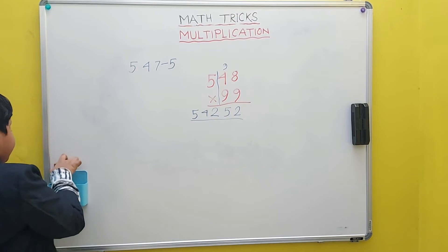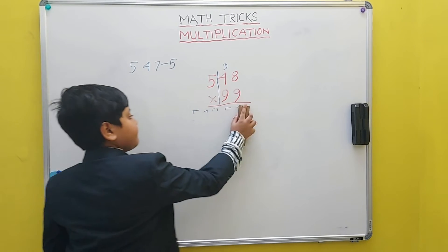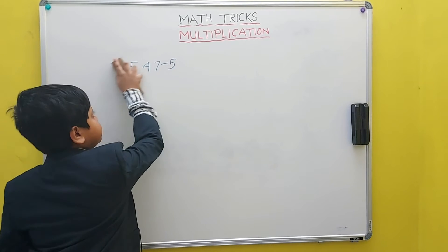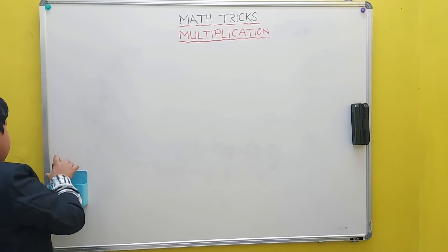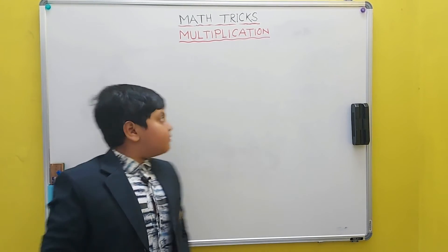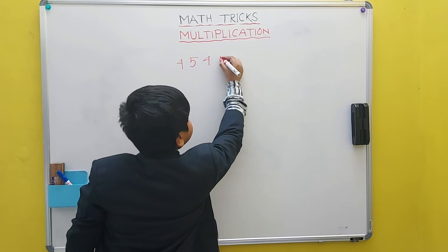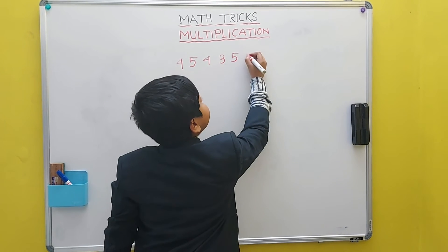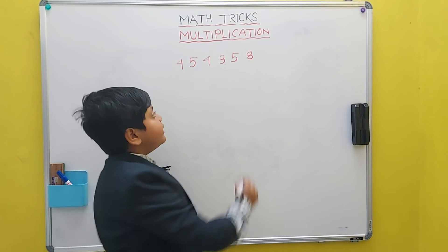Let's take the next example. The next example will be 454358. Now, we will take 9999.